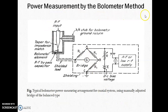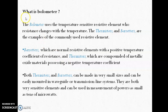This is the power measurement by bolometer method. The bolometer method is used in higher frequency current or transmission line systems. A bolometer is a temperature-sensitive resistive element. The bolometer can use either a thermistor or a barretter as its element. The thermistor is a negative temperature coefficient device, and the barretter is a positive temperature coefficient device, so the metals used in both are different.